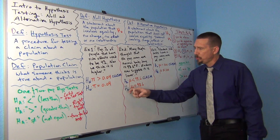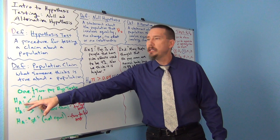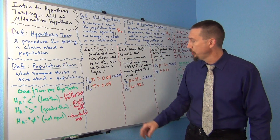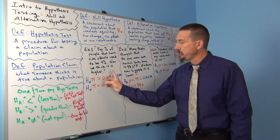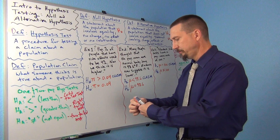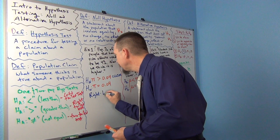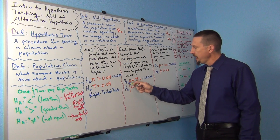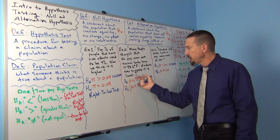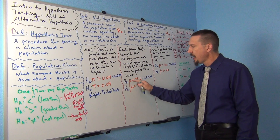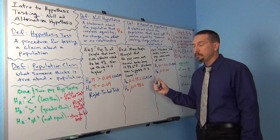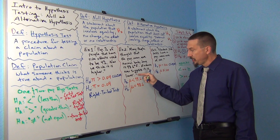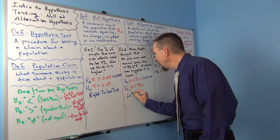Let's see what kind of tests these examples were. Remember, it's HA that decides — not the claim, not the null. Our first HA was greater than, which points to the right, so that's a right-tailed test. For the next one, HA was less than, which looks like an arrow pointing to the left. It's the HA sign that tells you the test type — sometimes the claim is a null, sometimes it's an alternative. This one's going to be a left-tailed test.